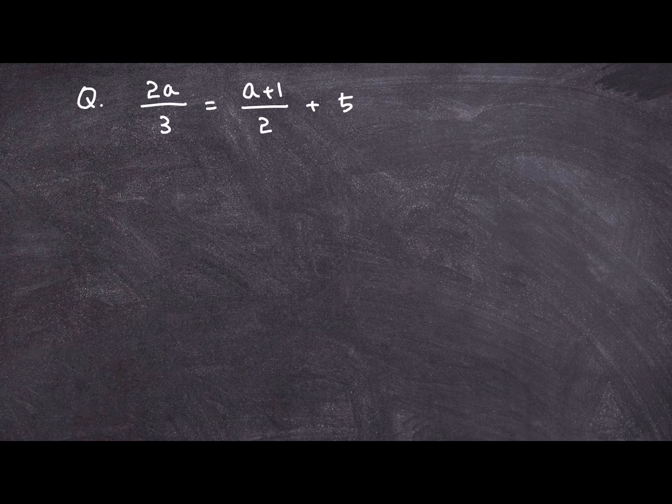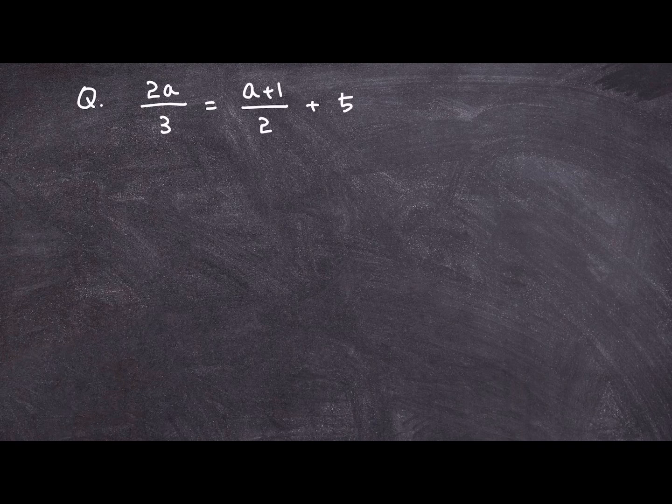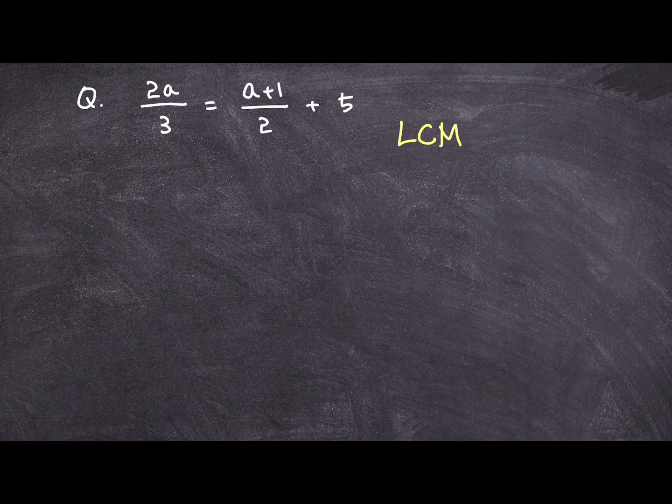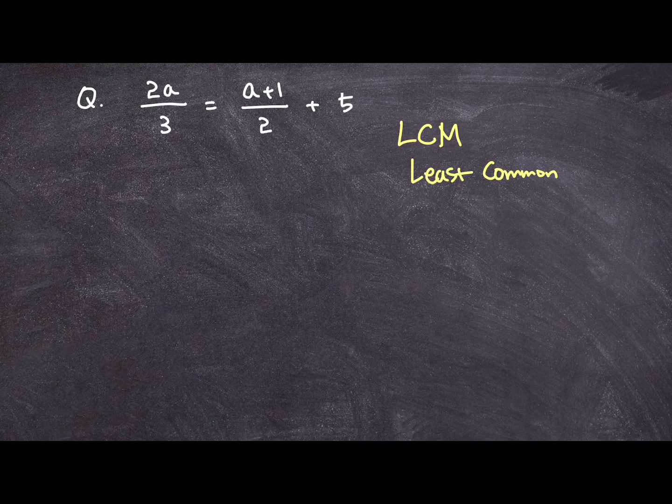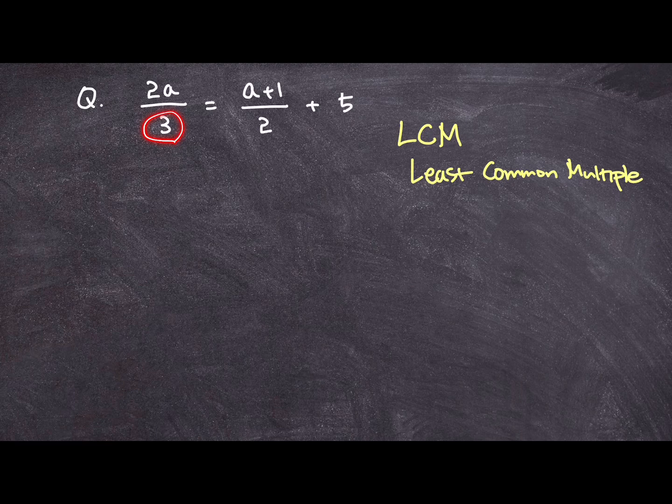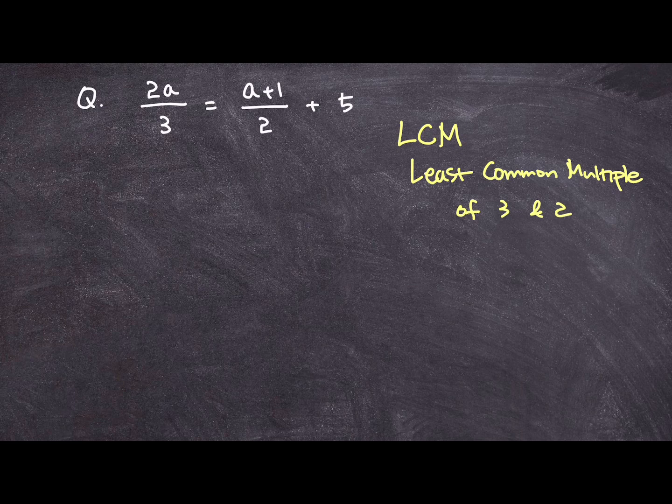And that little skill or that little tip is to think of a LCM or least common multiple. LCM as in the least common multiple of those denominators that are present in this expression. And those are 3 and 2. And of course the LCM for 3 and 2 is 6.